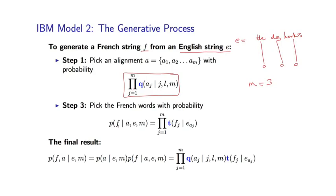In the second step, we fill in the French words one by one, conditioned on the English word we're aligned to. The final result is that the joint probability of f and a conditioned on the English sentence e and the length of sentence m is the product of these two model terms.